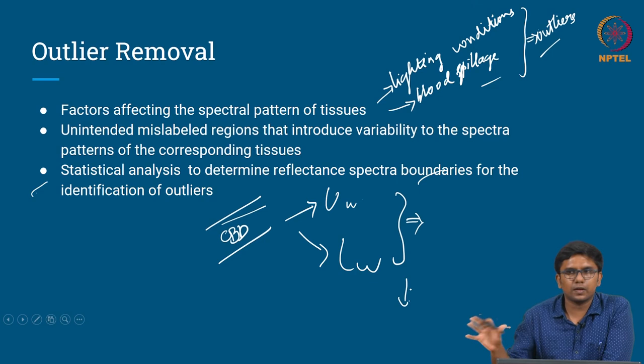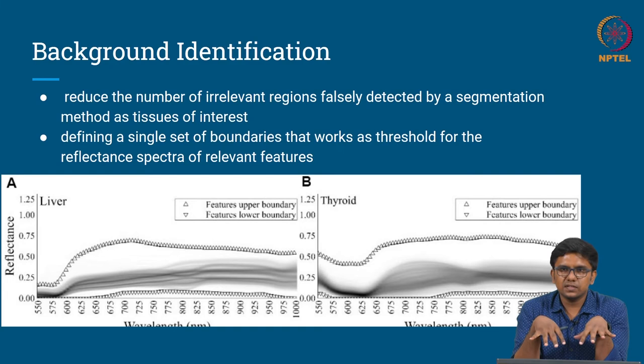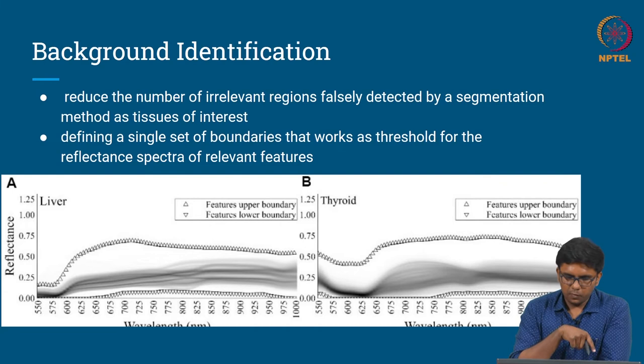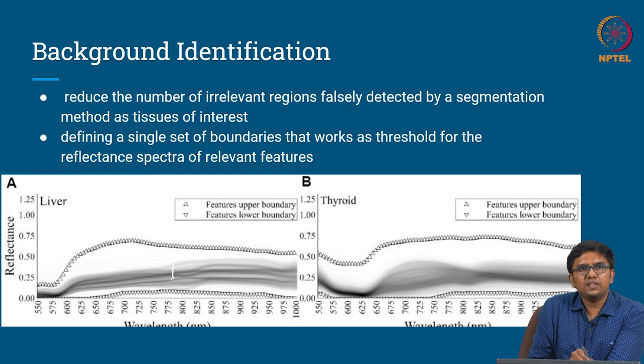A similar approach is used for background identification. Within the surgical field there can be instruments and the surgeon's hands. To reduce irrelevant regions falsely detected by a segmentation method, they define boundaries that act as a threshold for the reflectance spectra of the relevant features. For example, to identify the liver they have an upper and lower boundary for the reflectance spectra, and only those values in between are considered for data processing. The same is applied for thyroid surgery.